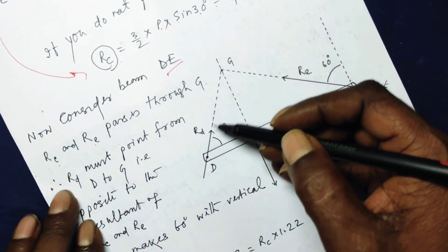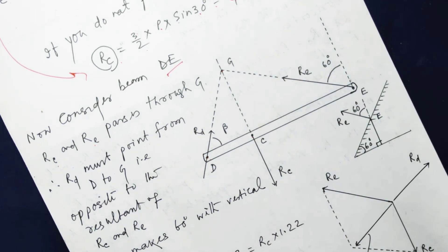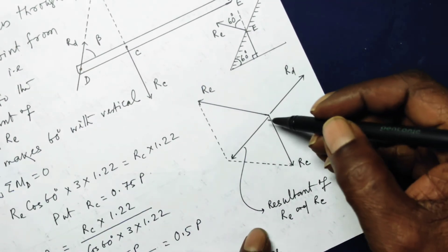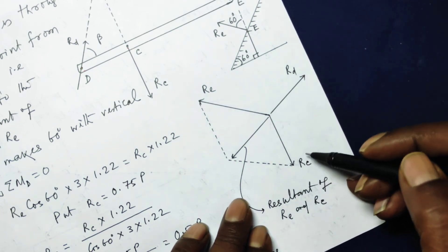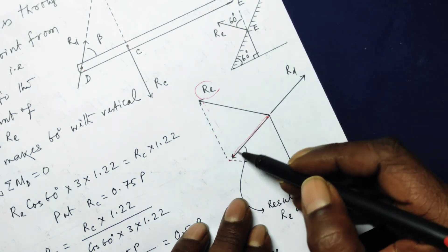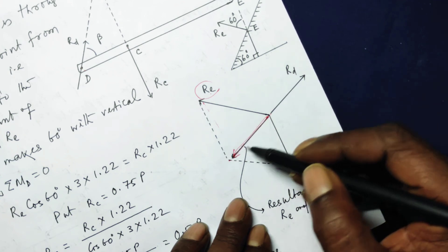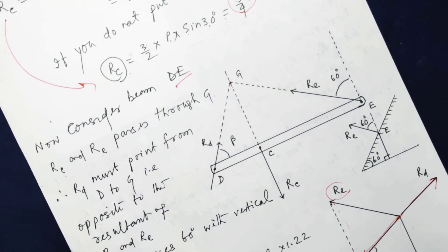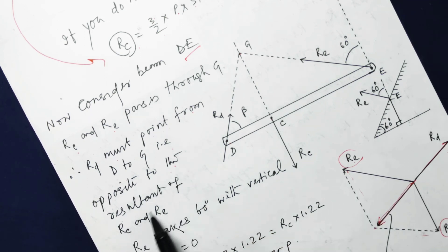RD must point from D to G — that is, opposite to the direction of the resultant of RC and RE. This is because RC and RE act in certain directions, their resultant points in one direction using the parallelogram law, and RD must balance this resultant by pointing opposite to it.